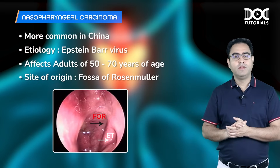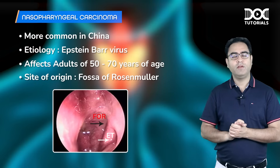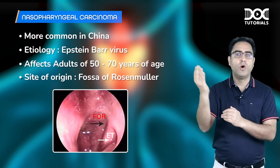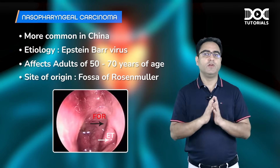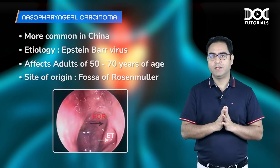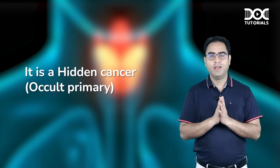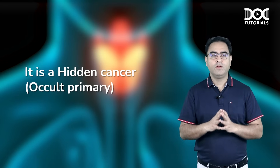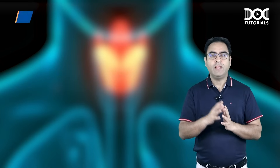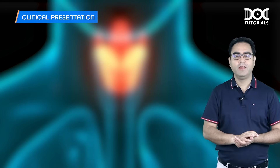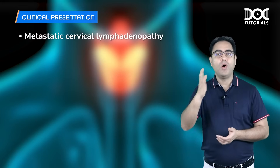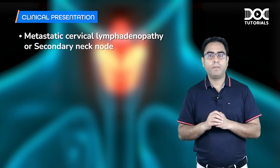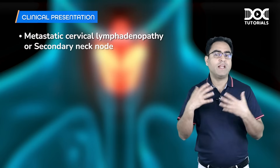The fossa of Rosenmüller is just above the Eustachian tube opening. NPC is a hidden, occult primary cancer — not visible from outside and easy to miss. Therefore, the most common presentation of NPC is metastatic cervical lymphadenopathy (secondary neck node). The primary cancer is hidden, so presentation unfortunately occurs via secondary neck nodes.